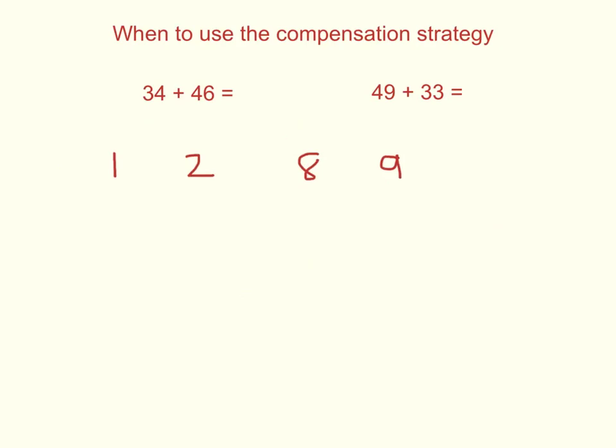Numbers that end in 1, 2, 8, and 9 are numbers that are closest to the most friendly numbers, which are numbers that end in zeros. Although you can use the compensation strategy for any and all questions, it is a much easier strategy to use when you have questions that have numbers in it that end in 1, 2, 8, and 9.